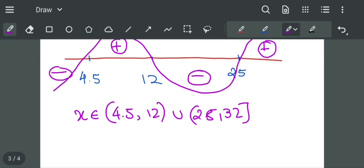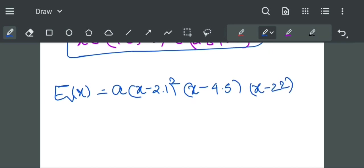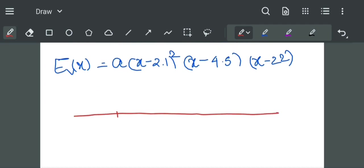Now for Vinay, EV(x) equals a times (x minus 2.1) squared times (x minus 4.5)(x minus 22). We will do the same: first draw a number line and mark its roots at 2.1, 4.5, and 22.